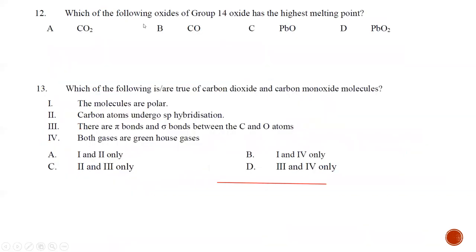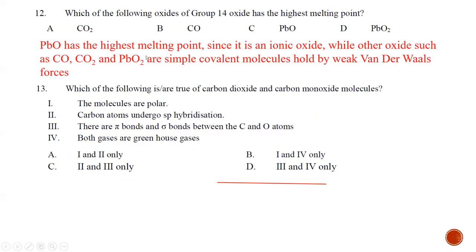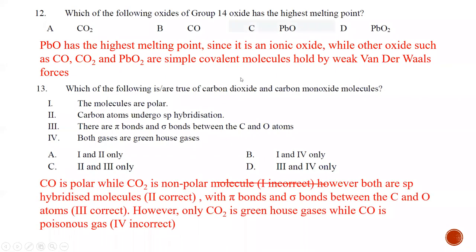Question number twelve: which oxide of Group 14 has the highest melting point? CO2 is a simple covalent molecule held by weak van der Waals forces. CO is also a simple covalent molecule. PbO is an ionic compound. PbO2 is also a simple covalent molecule. The best answer that has the highest melting point is lead(IV) oxide, PbO2. The answer is B.